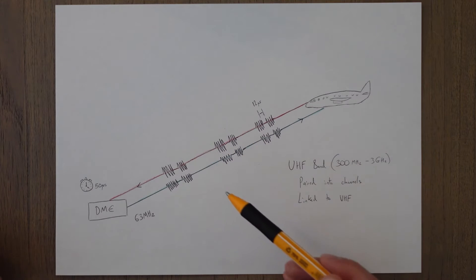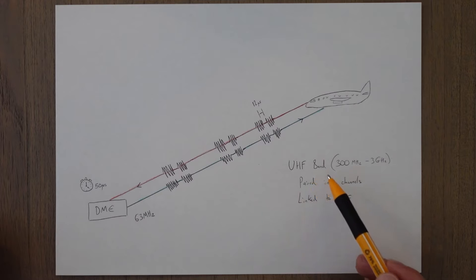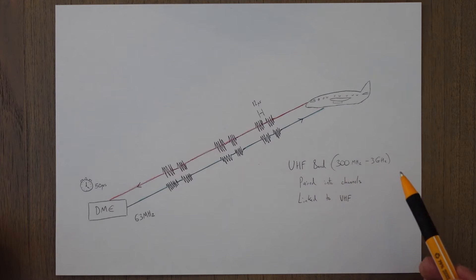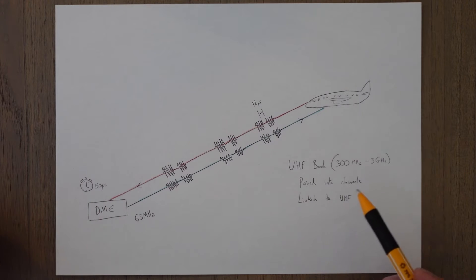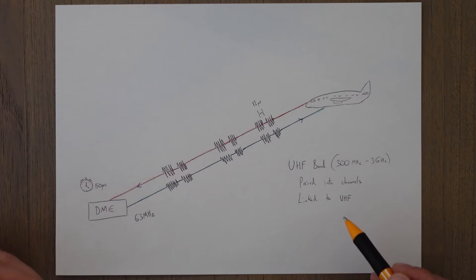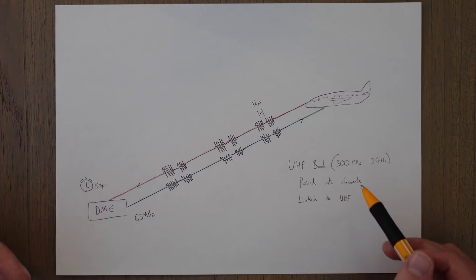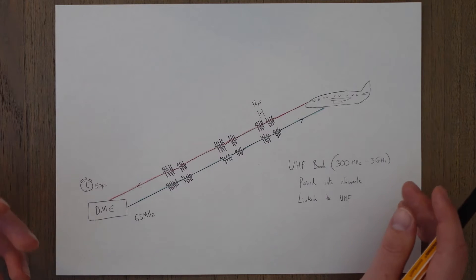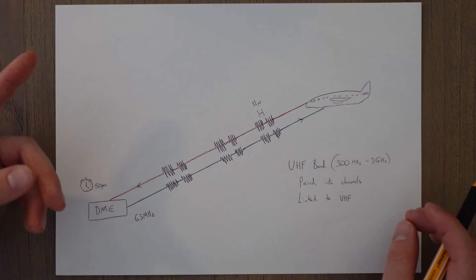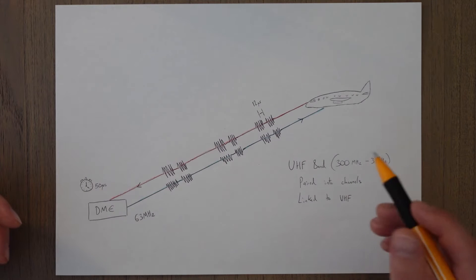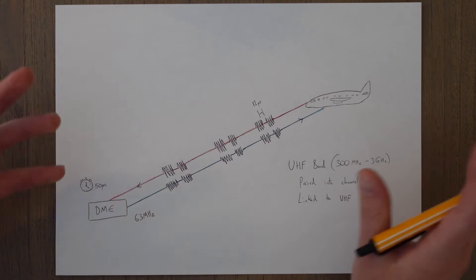The DME system requires two frequencies to operate, each separated by 63 megahertz, existing in the ultra high frequency band between 300 megahertz and 3 gigahertz. These two frequencies are paired together into channels, and those channels are then linked to a VHF frequency. So when you tune in the VHF frequency, the DME channel is automatically tuned by the onboard aircraft equipment if there's a co-located DME available.